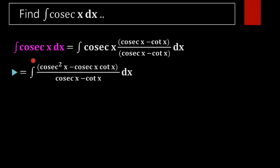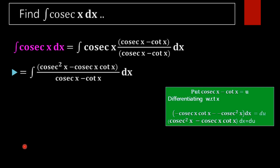Now we notice that the derivative of the denominator is present in the numerator. The derivative of cosec(x) is minus cosec(x)·cot(x), and the derivative of minus cot(x) is cosec²(x). So we take u = cosec(x) minus cot(x) and differentiate with respect to x.